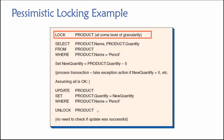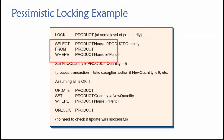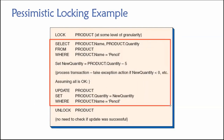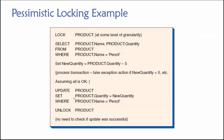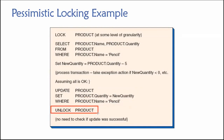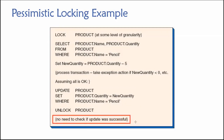Between this lock statement and the unlock statement, we're the only user that can read or work with pencils in this example. We issue our lock, do our work — no one can work with pencils while we're doing this. We're done, we ultimately update our product, that change is committed, and then we unlock it. In contrast to optimistic locking, there's no need to check if the update was successful because we know it was.